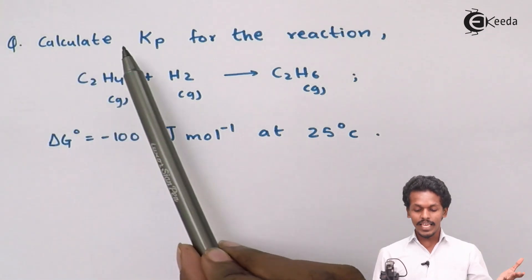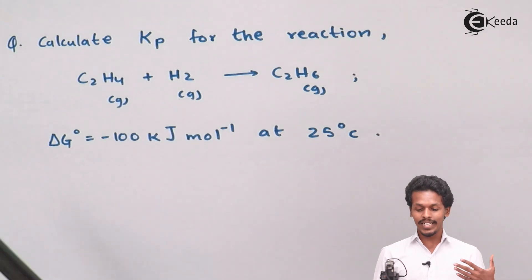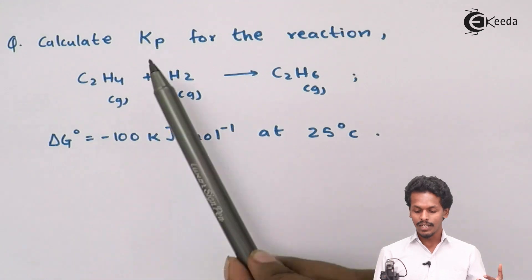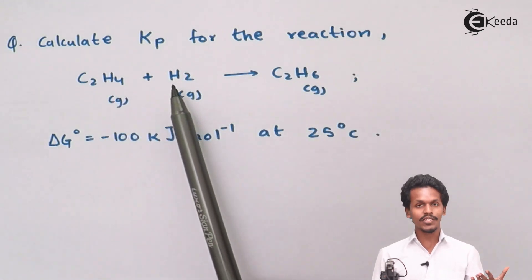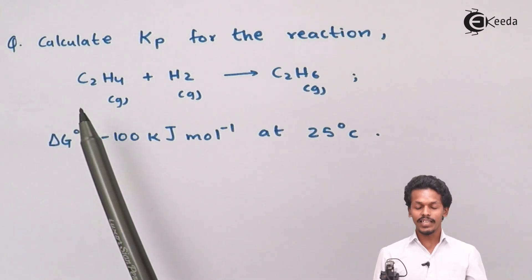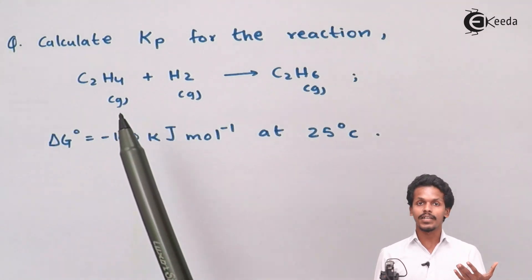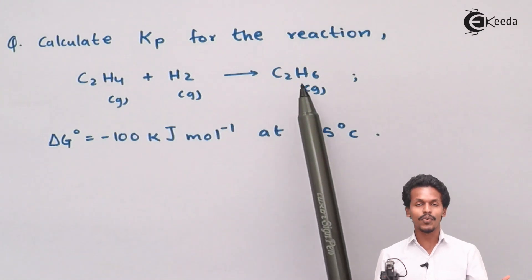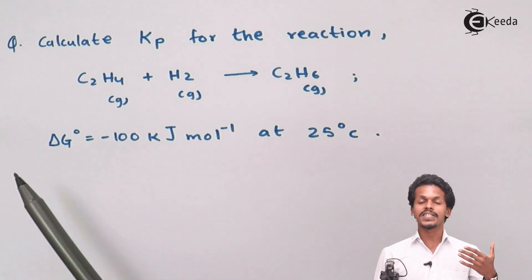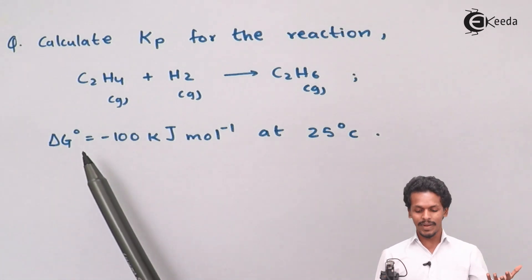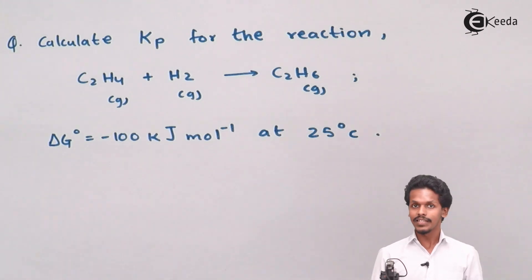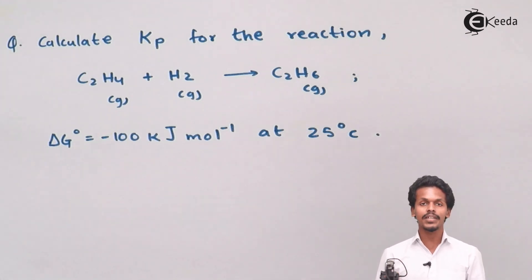We have to calculate Kp, the equilibrium constant in terms of pressure, for the reaction C2H4 + H2 → C2H6. Basically, ethene undergoes a reduction process to form ethane. The standard Gibbs free energy change ΔG° has been found to be minus 100 kilojoules per mole at 25°C.